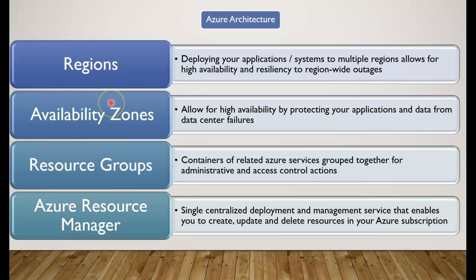Just to recall, availability zones include more than one data center. So even if an entire data center goes down within a certain region, if we have deployed our application services to multiple availability zones, the other one that is still up will take over the load of that specific application and will stay up and running. Deploying to multiple availability zones really protects applications from a single data center failure, allowing us to gain a higher level of availability. Both availability zones and regions interplay to allow us higher availability.